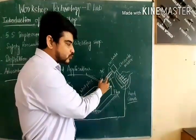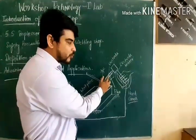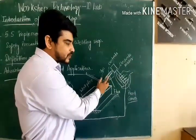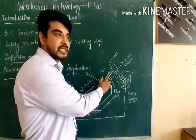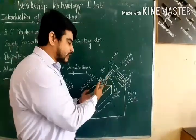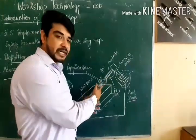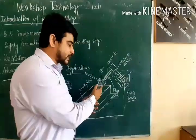This is our electrode. The outer coating on the electrode is called flux coating. If this flux coating is not properly applied, it can result in defects in the welded joint.